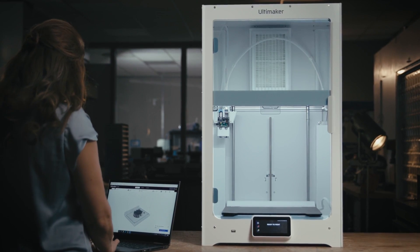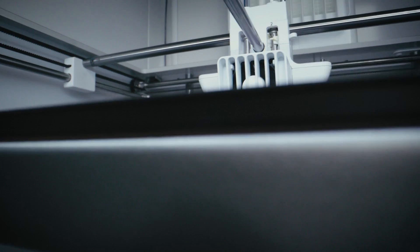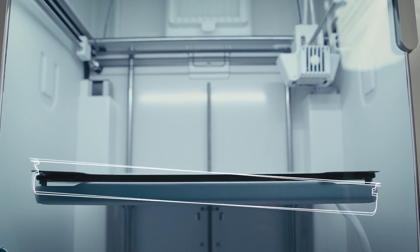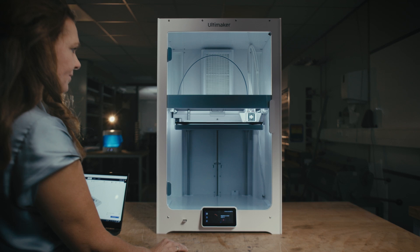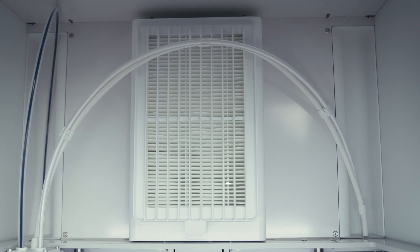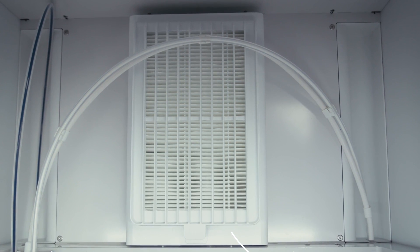The S7 builds on Ultimaker's already remarkable 3D printing reliability with new features, such as an inductive sensor that allows for improved automatic bed leveling, and an integrated air manager for excellent environmental control right out of the box.